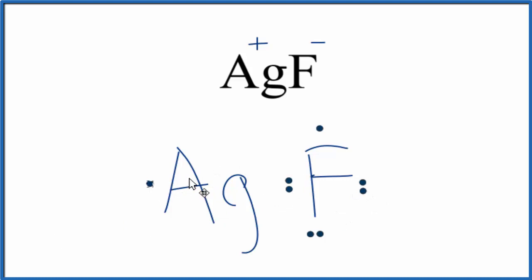And this silver here, this valence electron is transferred to the fluorine. Now the fluorine, it gained the electron, so it's got a negative charge, a 1-.